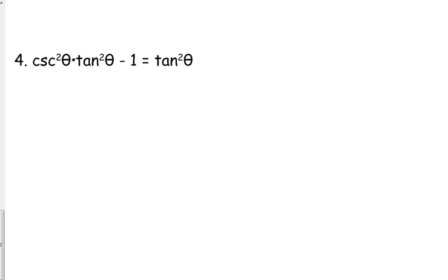It's pretty obvious we're going to work on the left side. There's not really anywhere we can go with the right side. It's one term, tangent squared. Now, I want to draw your attention to something. I know your eye is probably drawn to this tangent squared minus one, but you need to notice that tangent squared is attached to cosecant squared because it's cosecant squared times tangent squared.